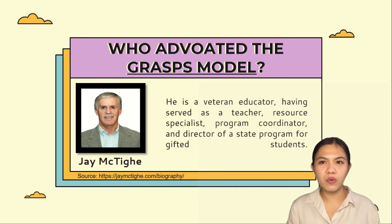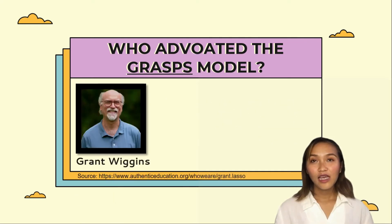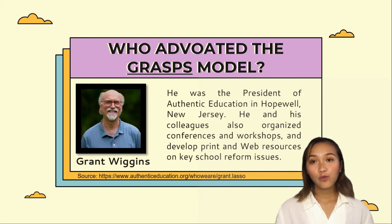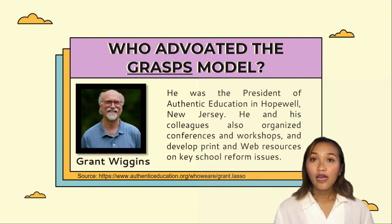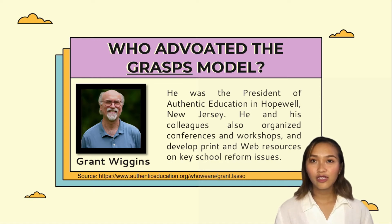Jay McTie co-authored 17 books including the award-winning and best-selling Understanding by Design series with Grant Wiggins. Grant Wiggins was the president of Authentic Education in Hopewell, New Jersey. He and his colleagues organized conferences and workshops and developed print and web resources on key school reform issues. Grant is perhaps best known for co-authoring with Jay McTie Understanding by Design, the award-winning and highly successful program on curriculum design used all over the world.